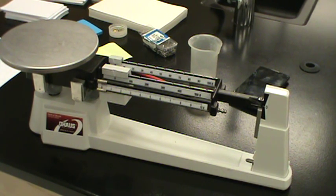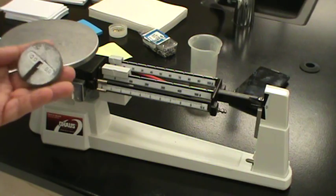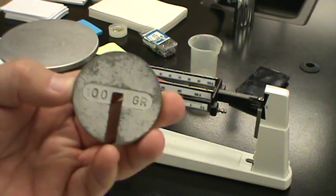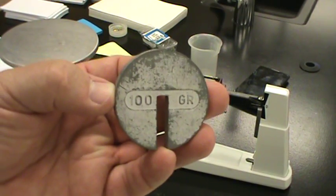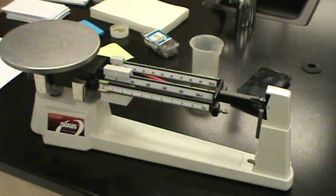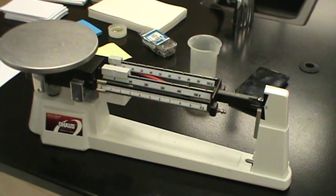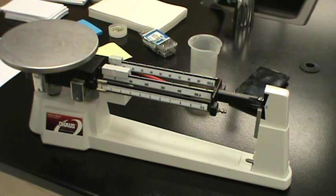For example, I have in my hand here what is a hundred, let me see if I can get that in there for you. It says 100 grams, this is a 100 gram weight. Well, we're going to put it on our triple beam balance, and we're going to see if it does indeed weigh 100 grams.